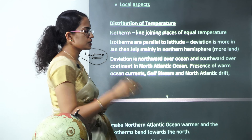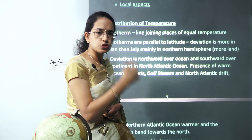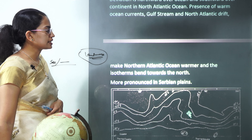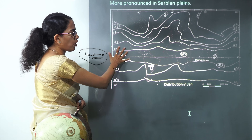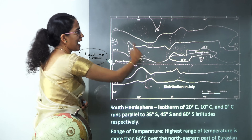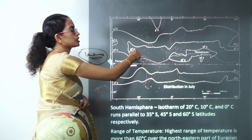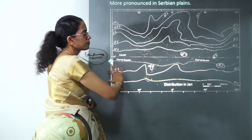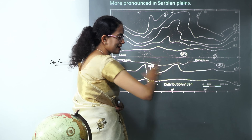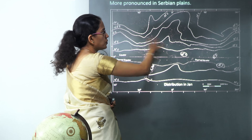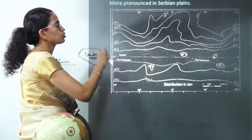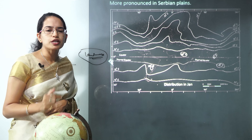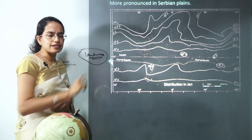Regarding the distribution of temperature, lines joining places of equal temperature are known as isotherms, similar to isobars which join lines of equal pressure. Isotherms are basically parallel to the latitude. Comparing the January and July world distribution maps: in the Northern Hemisphere, bends are less pronounced in July but more pronounced in January. The Southern Hemisphere has lesser land mass, so lines are more parallel with fewer bends. The Northern Hemisphere shows more bends due to continentality — the presence of large land masses.